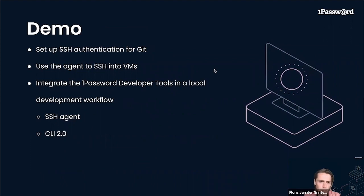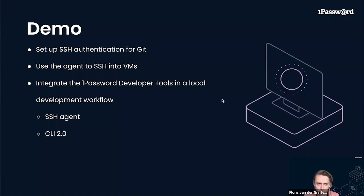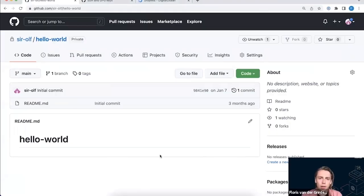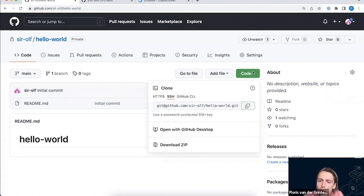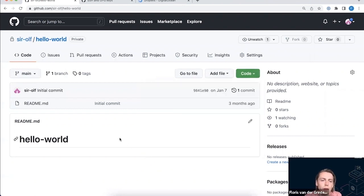Demo time. What I'm going to be showing you today is how easy it is now to set up SSH authentication for Git, then how to use the agent to SSH into VMs — using Digital Ocean droplets as an example — and then how you can integrate the 1Password developer tools in a local development workflow. I just set up a new machine and I'd like to continue working on my project that's on GitHub, but it's a private project and I want to clone it to start developing on it, so I'm going to click the SSH URL and clone it.